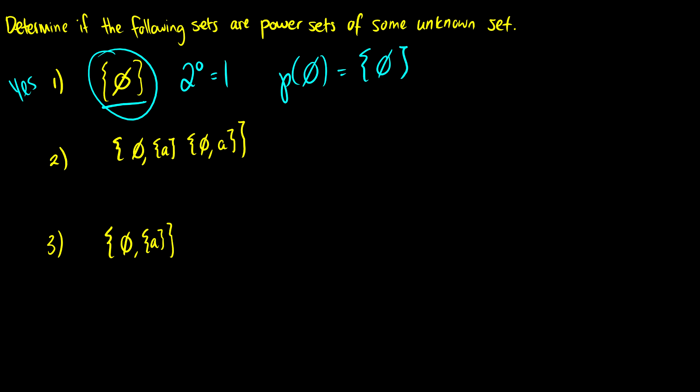Okay number two. We have the set containing the empty set, the set containing a, and the set... this is not equal to two to the power k for some k in our positive integers. So this is not going to be a power set because we know the size of a power set is always going to be a power of two. So this has three elements so immediately we throw it away.